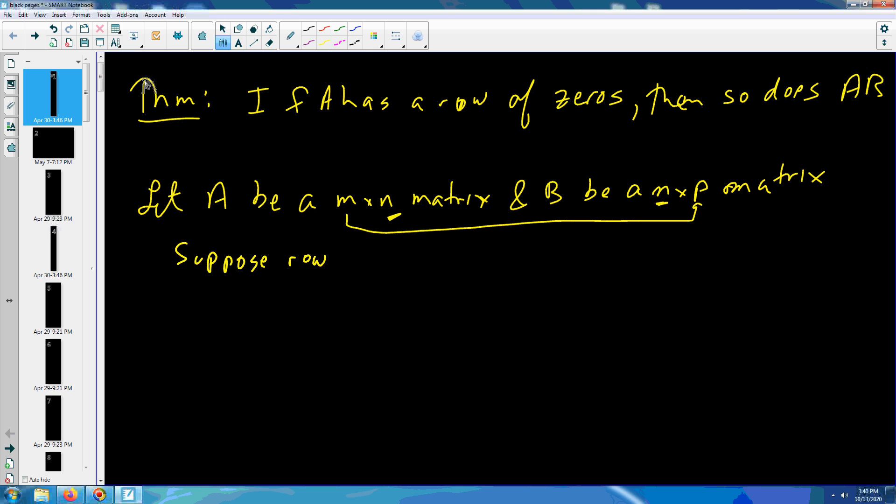Suppose row i of matrix A consists of all zeros. I claim row i of AB will have a row of zeros.